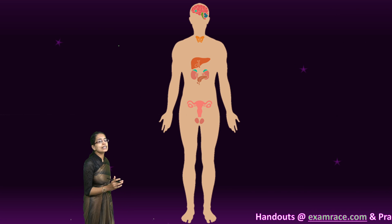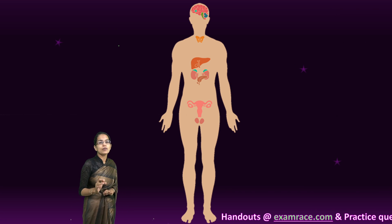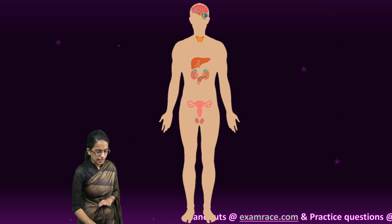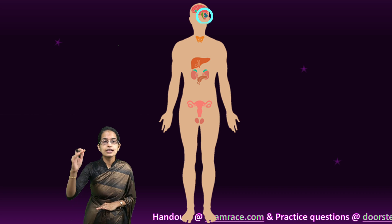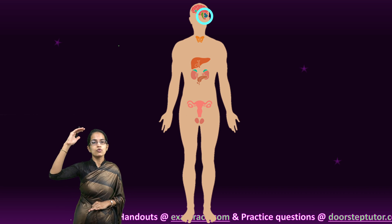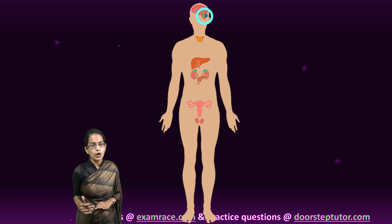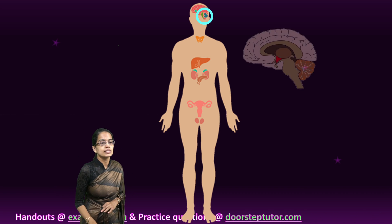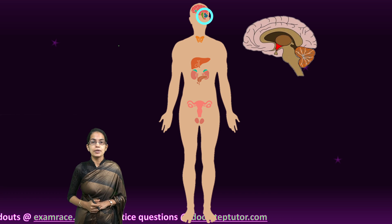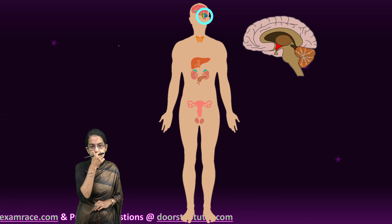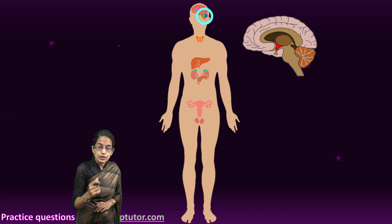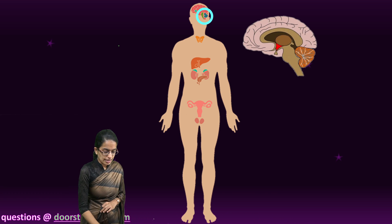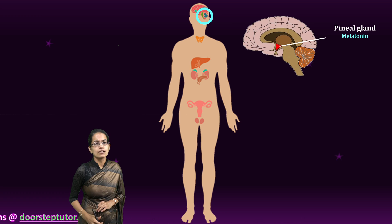To begin with, let's understand the various endocrine glands. We would understand those from the upper body towards the lower body. Starting from the brain, there are three important endocrine glands that we would understand.